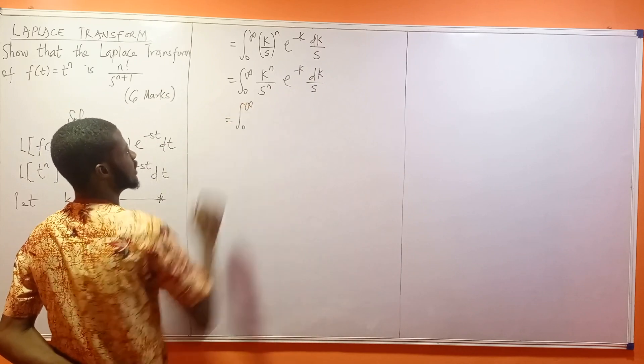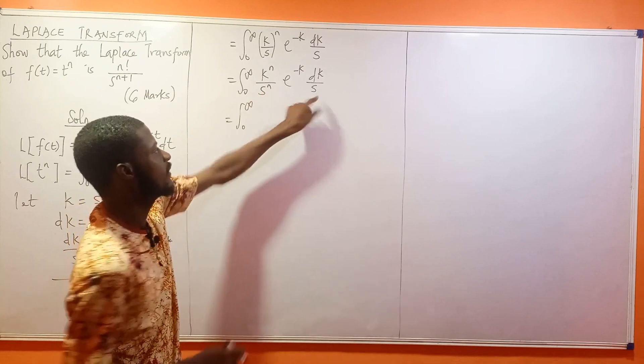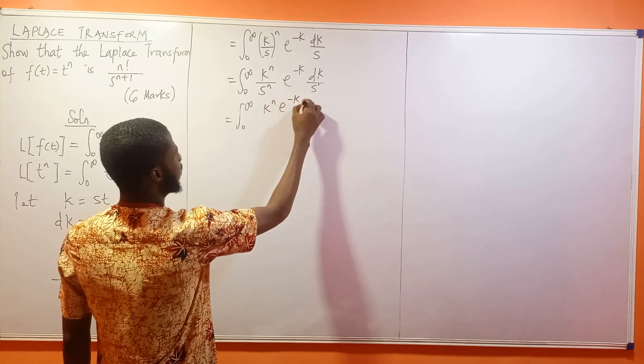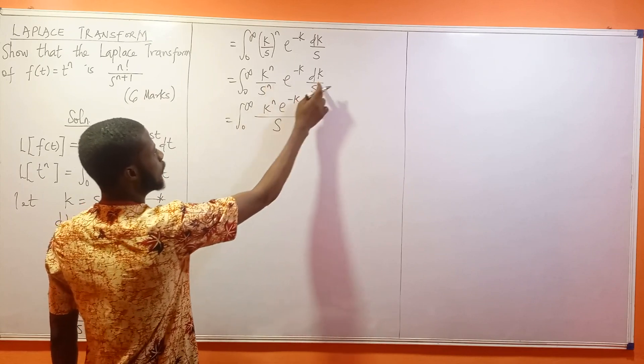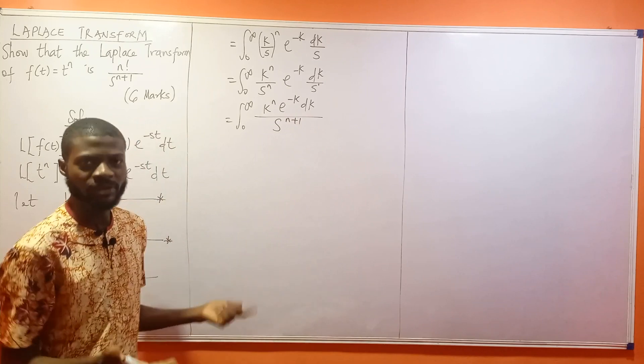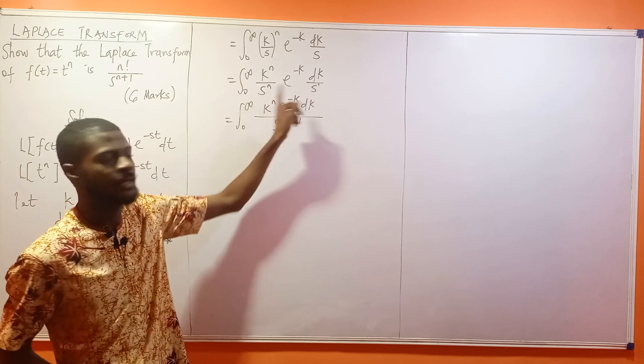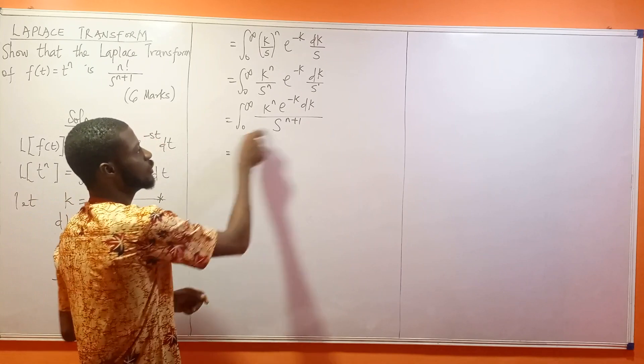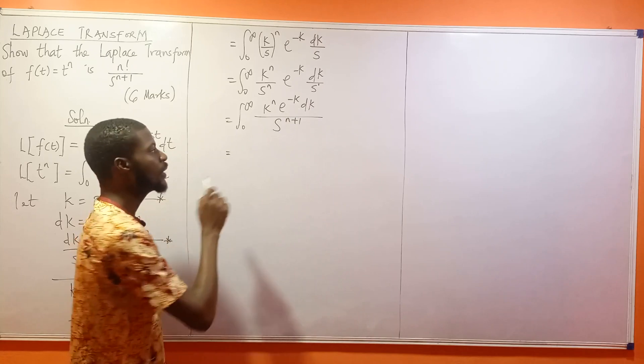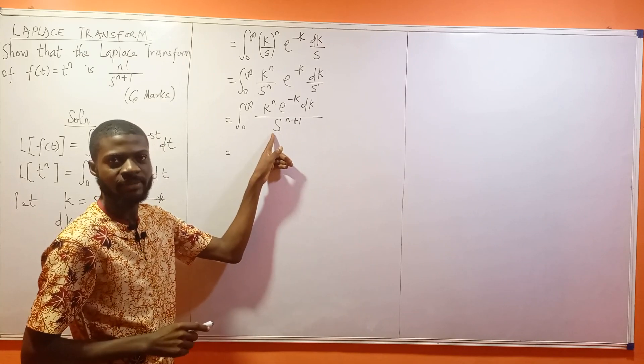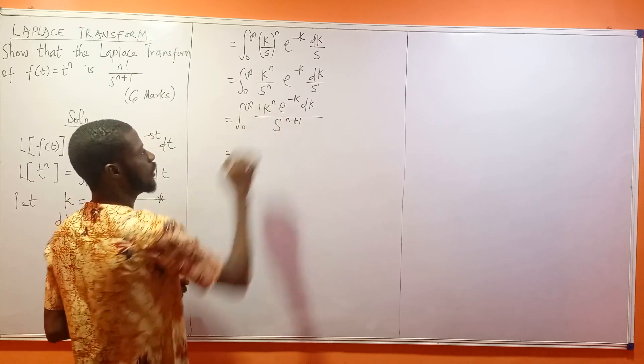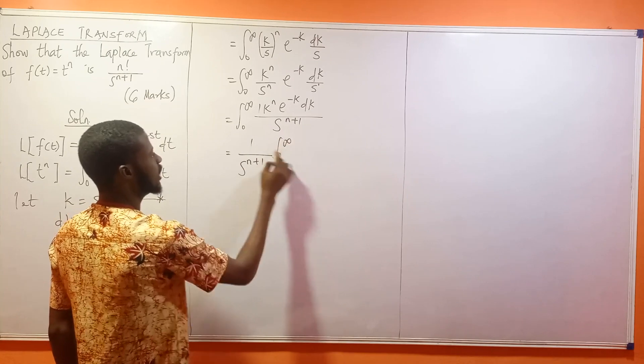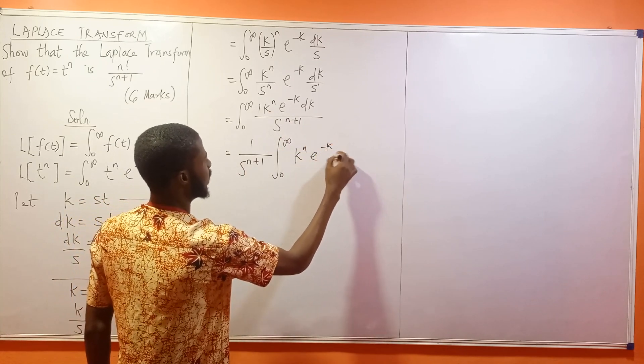Expanding the brackets gives k^n/(s^n) × e^(-k) × dk/s, which equals the integral from 0 to infinity of k^n e^(-k) dk divided by s^(n+1). Since s is a constant, I can factor out 1/s^(n+1), leaving (1/s^(n+1)) times the integral from 0 to infinity of k^n e^(-k) dk.